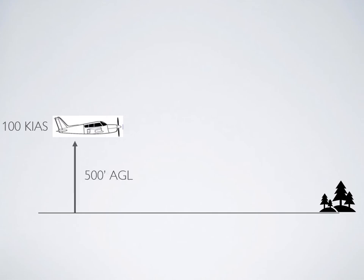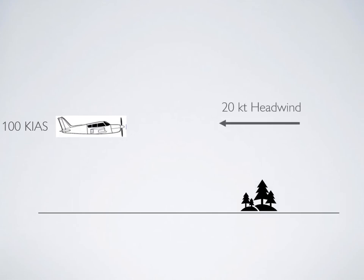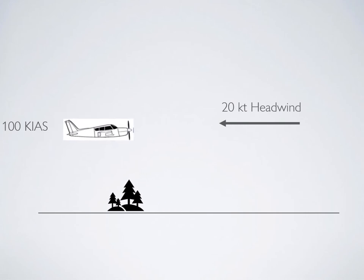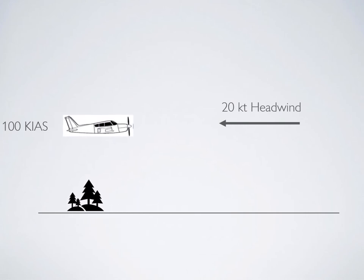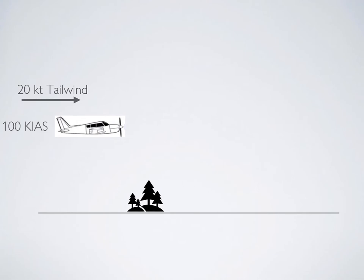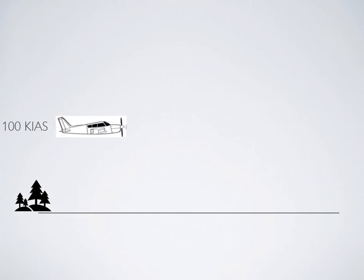In situations of heavy wind, powerful illusions may arise regarding the aircraft's actual airspeed. Knowing how the drift caused by heavy winds can create illusions will help pilots avoid dangerous situations which might arise from an improper reaction to an illusion.